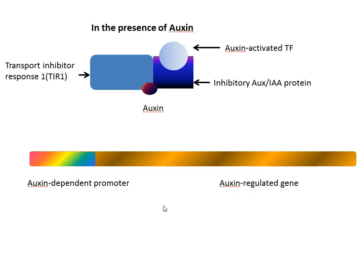What happens in the presence of auxin? So we've got auxin here — that's our little blob. Auxin interacts with the Transport Inhibitor Response 1 protein, also called the TIR1 protein, and stimulates TIR1 to interact with this inhibitory auxin IAA protein that has the transcription factor bound.